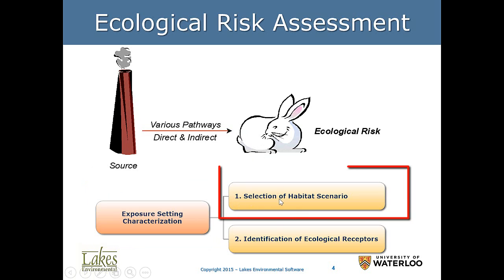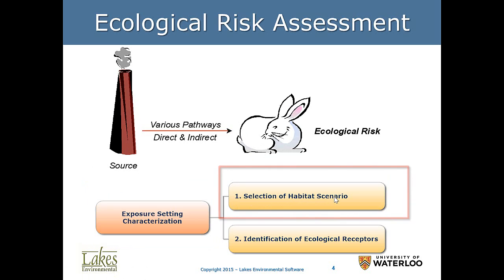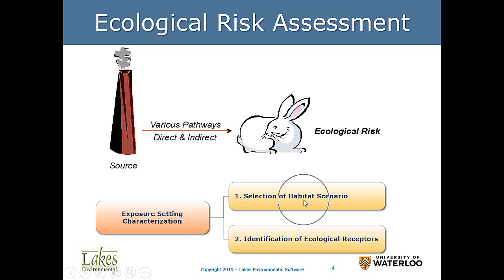To do that, we need to select the habitat scenario. For example, if we have a road that goes through a national park, that road will have heavy-duty trucks. Ecological scenarios could include national parks, forests, marshes, or desert — all ecological areas that need to be protected. We will represent the habitat by the food web that predominates in that habitat.